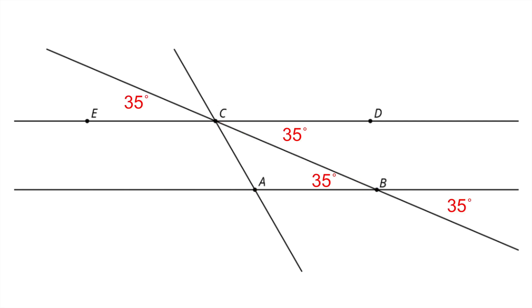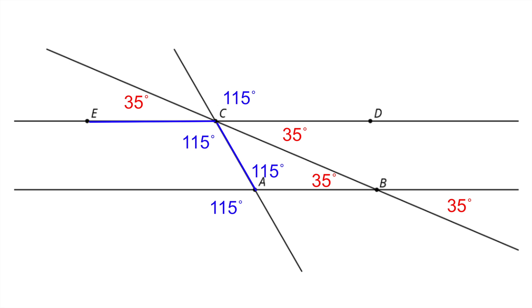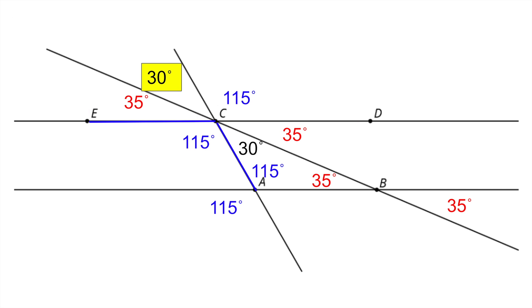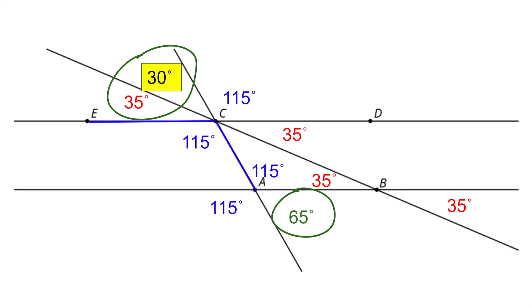Angle ABC has a measure of 35 degrees, so all the corresponding angles will also be 35 degrees. Angle BAC has a measure of 115 degrees, so all the corresponding angles would be 115 degrees. Line ED forms an angle of 180 degrees. 180 minus 35 minus 115 equals 30, so the measure of this missing angle is 30 degrees, and its corresponding angle will also be 30 degrees. Adding 35 degrees plus 30 degrees gives 65 degrees, and its corresponding angles would also be 65 degrees.